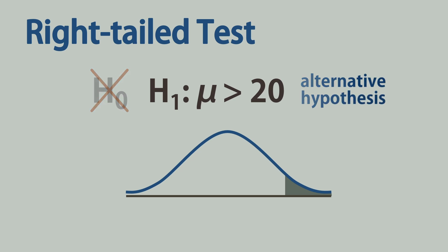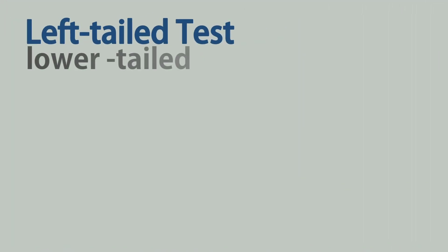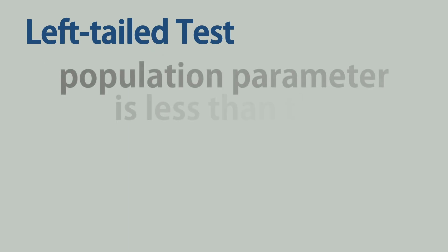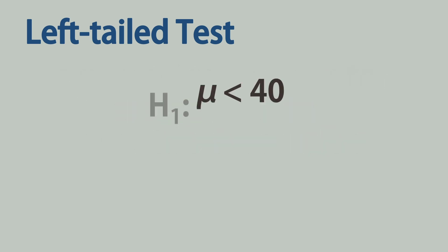In contrast to a right-tailed test, a left-tailed test or lower-tailed test is used when the alternative hypothesis specifies that the population parameter is less than the hypothesized value. For example, testing if the mean of a population is less than 40.